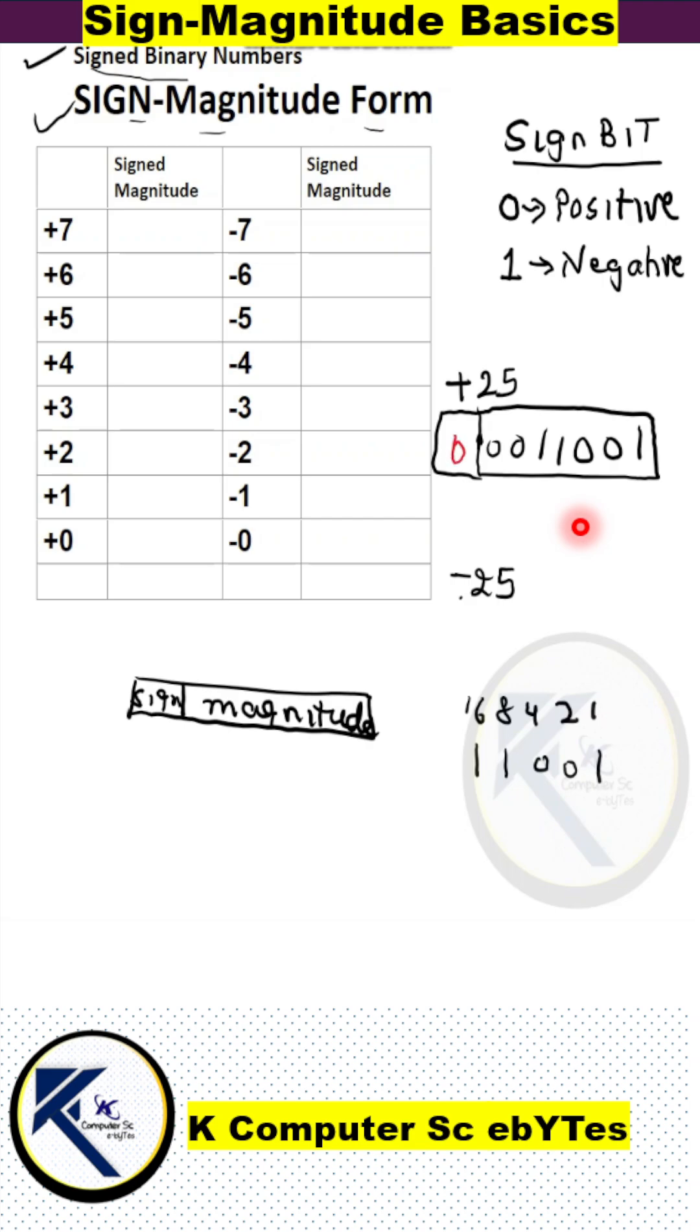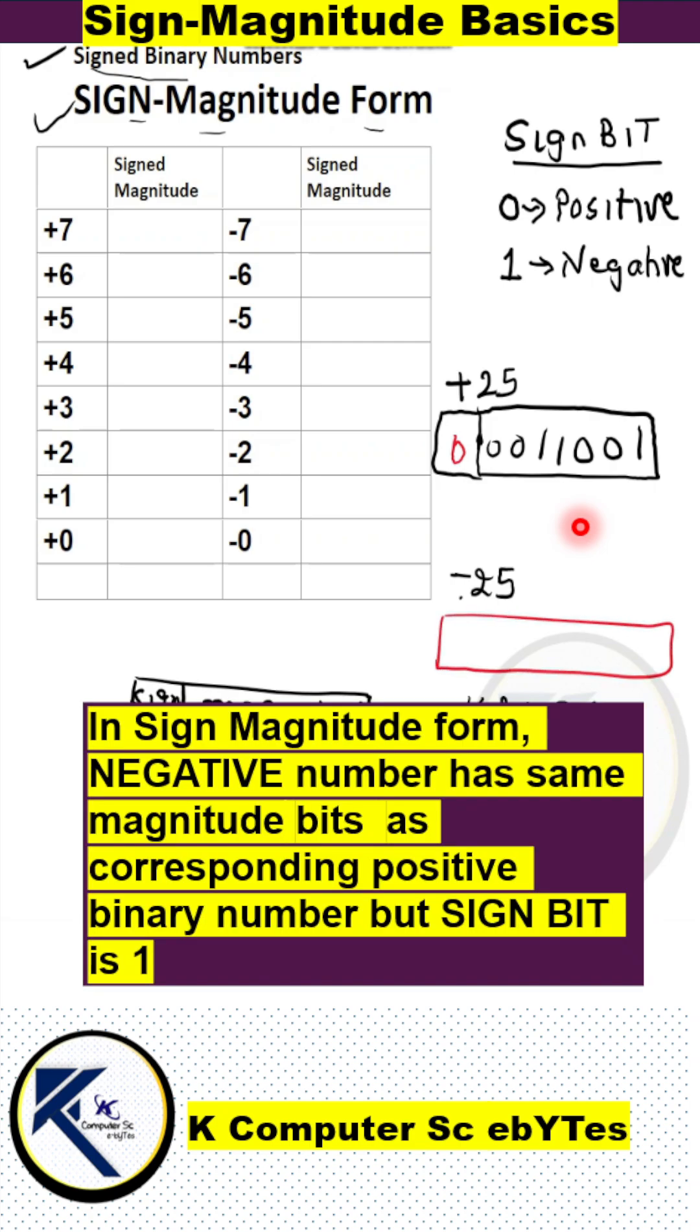For negative 25, the magnitude part will be same as plus 25, but the leftmost bit will be 1.